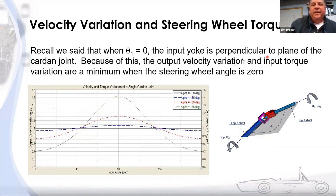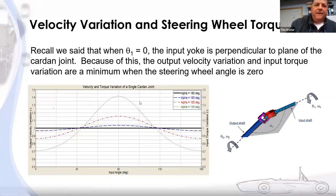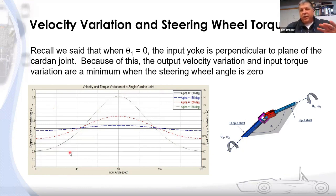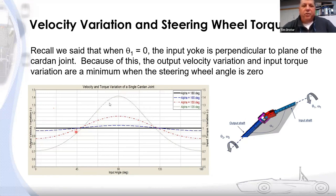The same observation holds with the velocity and torque curves: because at θ₁ = 0 the input yoke is perpendicular to the plane, we get a minimum velocity variation and minimum torque variation on-center. But again, if we design it so the straight-ahead position has the yoke in the plane, these curves flip.